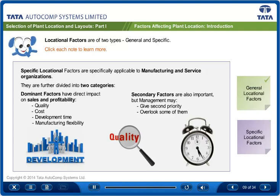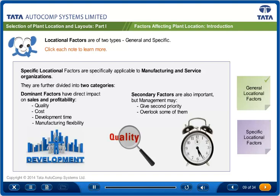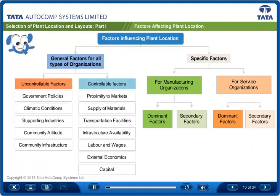Dominant factors are derived from priorities like quality, cost, development time, and manufacturing flexibility, which have direct impact on the competitive position of the company in the market with respect to sales and profitability. Secondary factors are important factors, but management may give second priority or may even overlook some of them depending on the overall impact they may have on the business plan. Shown here is the classification of the factors influencing plant location.